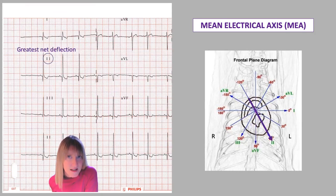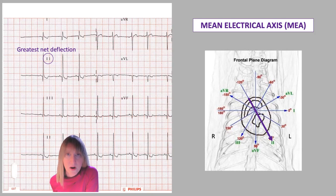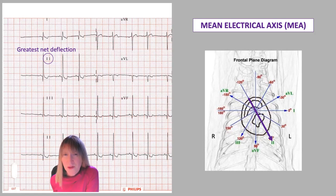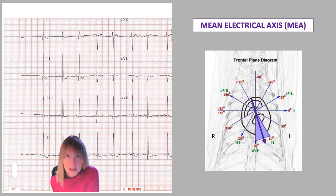If I look for the greatest net deflection in the frontal plane — which lead has the biggest QRS net deflection when you take the positives and subtract the negatives — my eyeball tells me that is lead two. So I can also conclude that the positive pole of lead two represents the general vicinity of the MEA. With those two methods, I know with pretty good certainty that my MEA is in the area depicted by the shaded triangle, which is in the normal range for a dog, pointing towards the left ventricle because it has more mass. So my MEA is proceeding roughly from right to left in this two-dimensional plane.